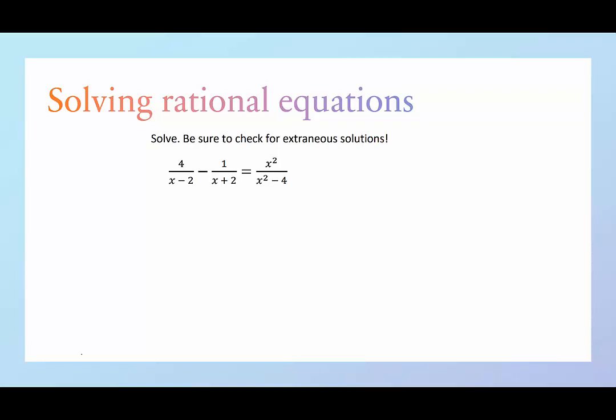Okay, so what's an extraneous solution? Well, that would be something that appears to be a solution, x equals 1 or x equals 7. However, for a rational equation, it would create a denominator of 0. So what would create a denominator of 0? This would be if we had x equals 2 or if we had x equals negative 2.